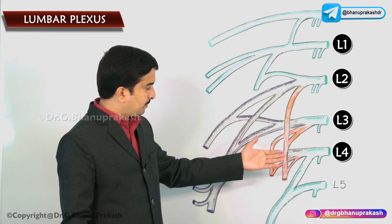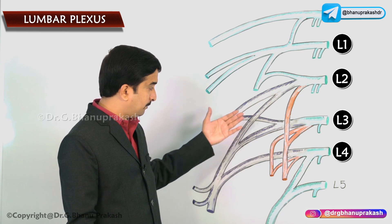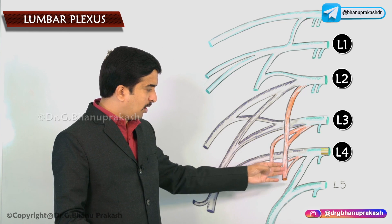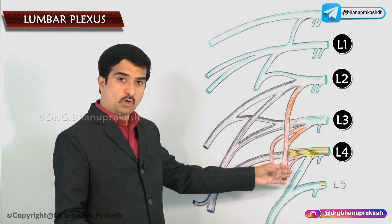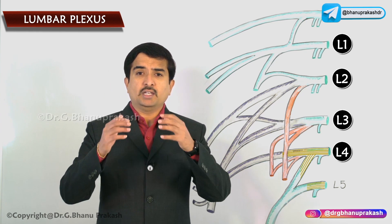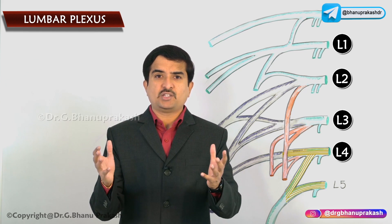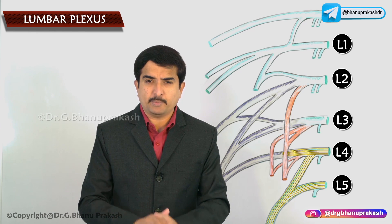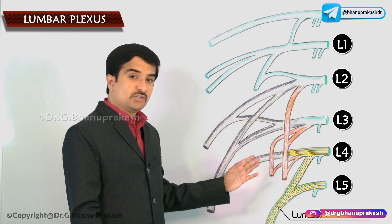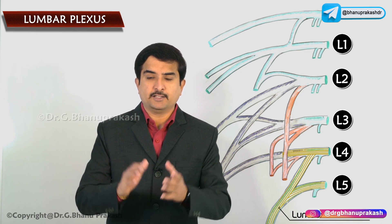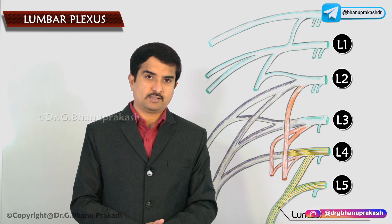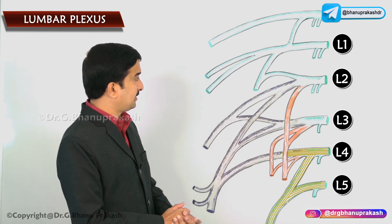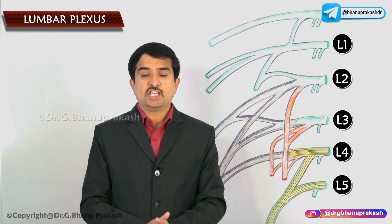The larger upper part of the ventral ramus of L4 takes part in the formation of the lumbar plexus, but the smaller lower part of L4 joins with the ventral ramus of L5 to form the lumbosacral trunk, which takes part in the formation of the sacral plexus. This is how the formation of the lumbar plexus takes place within the psoas major muscle.